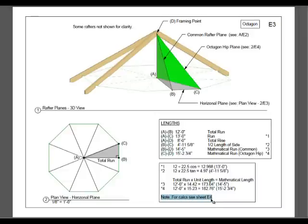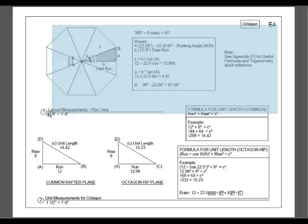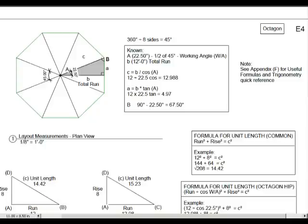Let's refer to sheet E4 for this. This is the layout measurement, the plan view. Let's start by figuring out where that 45 degree angle comes from. If you take 360 degrees, divide it by 8, you get 45 degrees. Angle A would be half of that. This is called your working angle. So half of 45 degrees is 22.5 degrees. This is a known factor, as is B. B we mentioned was your total run at 12 feet.